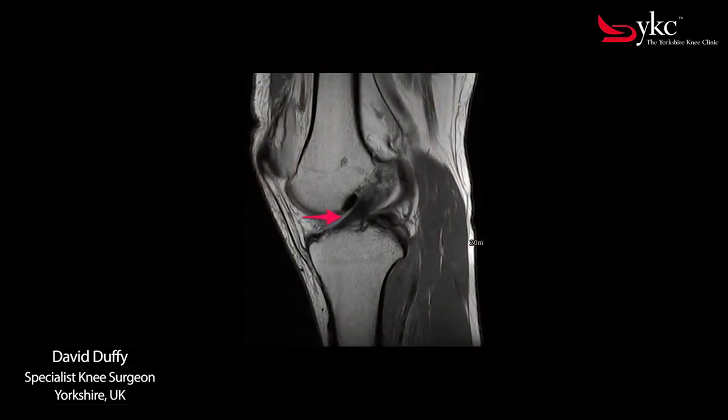Ligaments cannot be seen on x-rays; for this, an MRI scan is required. Here we are looking at the side of the knee — the red arrow points to the ACL, the dark structure that can be seen running diagonally.